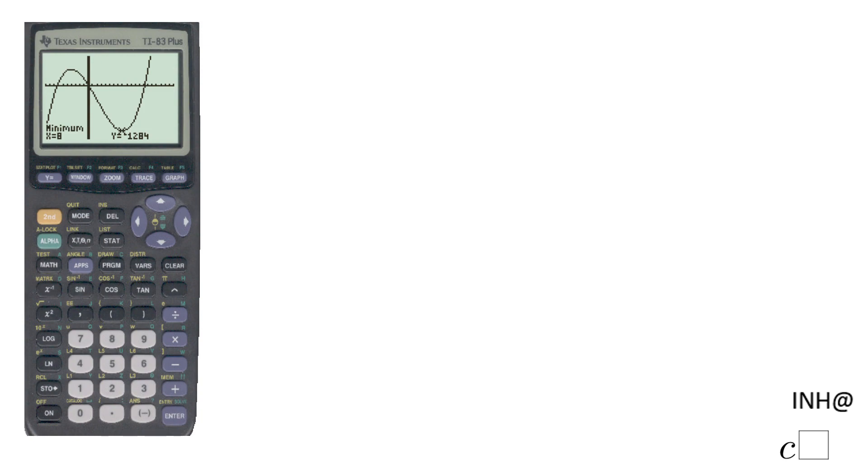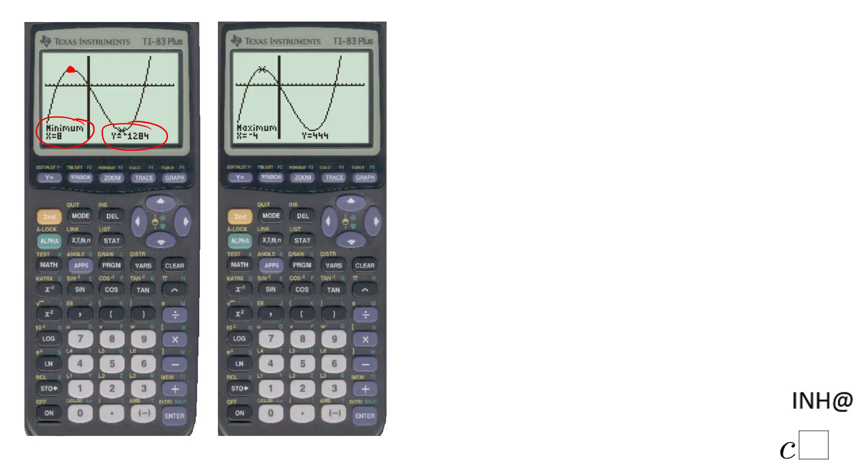And then I'm going to click Enter. The calculator is going to calculate, and you see the minimum is exactly 8. I was lucky when I guessed that 8. Usually you are not that lucky. So we have a minimum at x equals 8, and the minimum is negative 1,284. Similar, we can get this point, the relative maximum. Left bound, right bound, yes. And you should get a maximum at negative 4, and the maximum is 444.